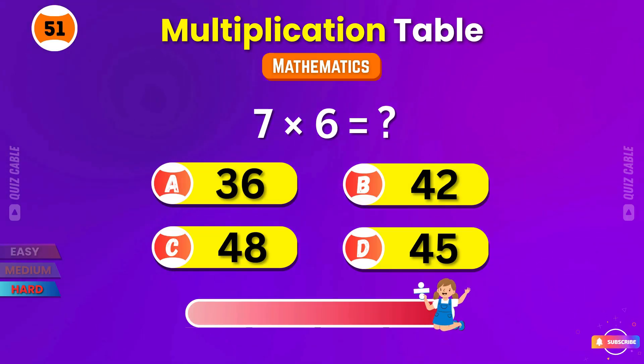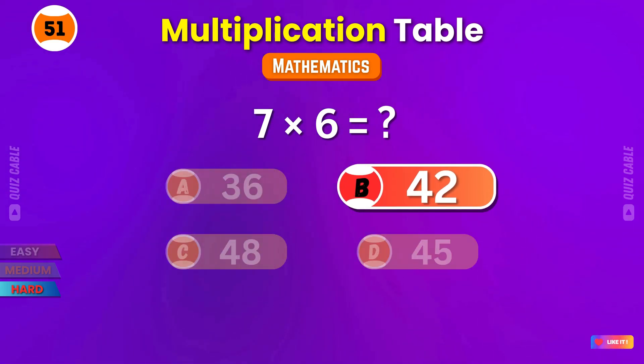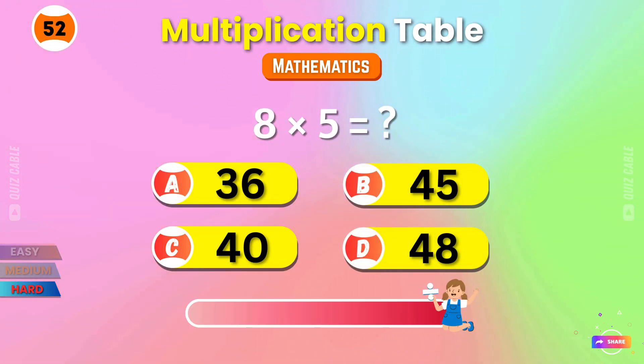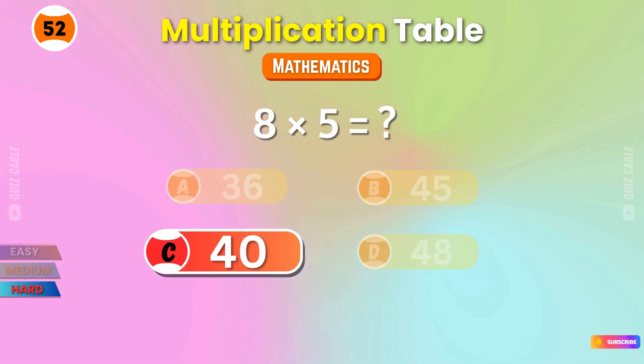7 times 6? 42. Keep shining. 8 times 5? 40. You're quick.